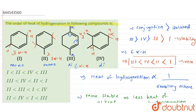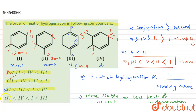Checking the options: option one gives 1 > 2 > 4 > 3 — incorrect. Option two gives 3 > 4 > 2 > 1 as stability, which corresponds to heat of hydrogenation order 1 > 2 > 4 > 3 — absolutely correct. Option three and option four are incorrect. Therefore, the correct answer is option B.